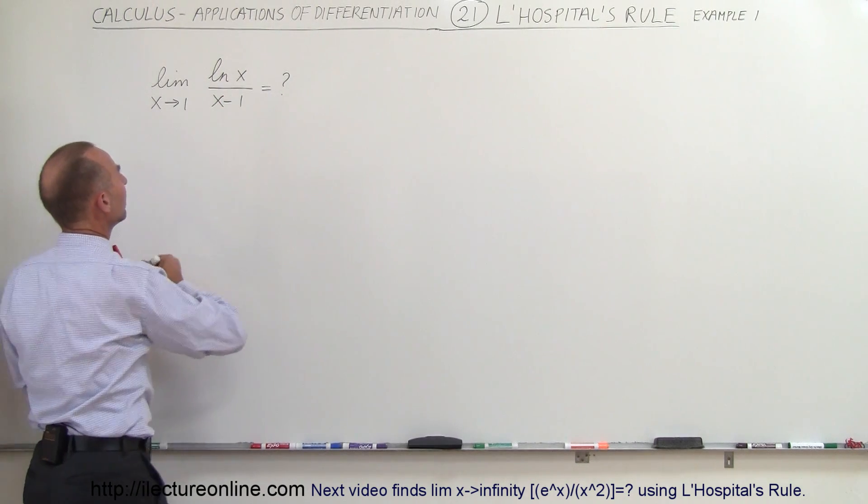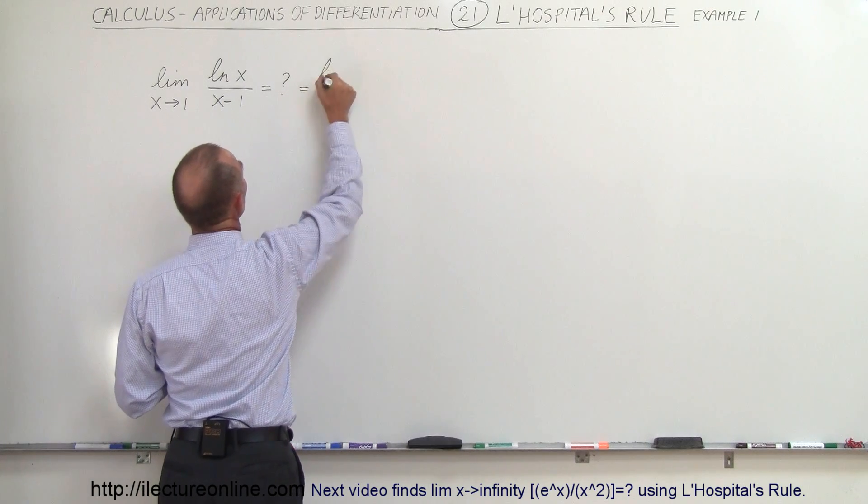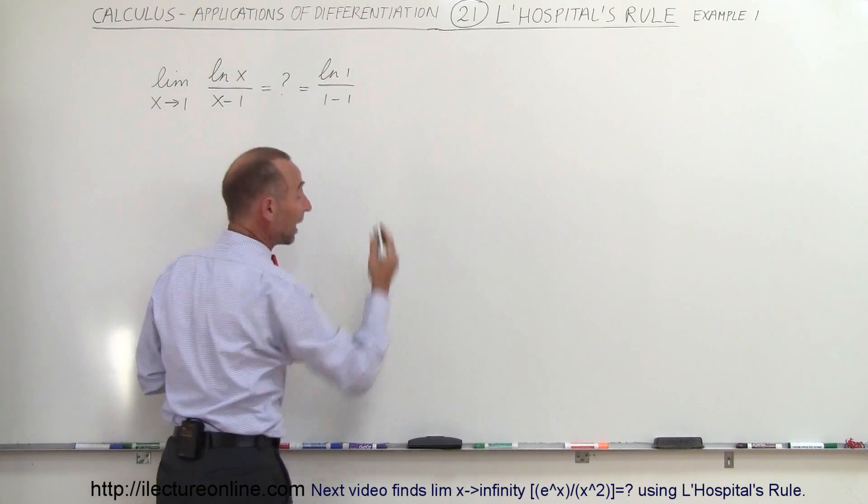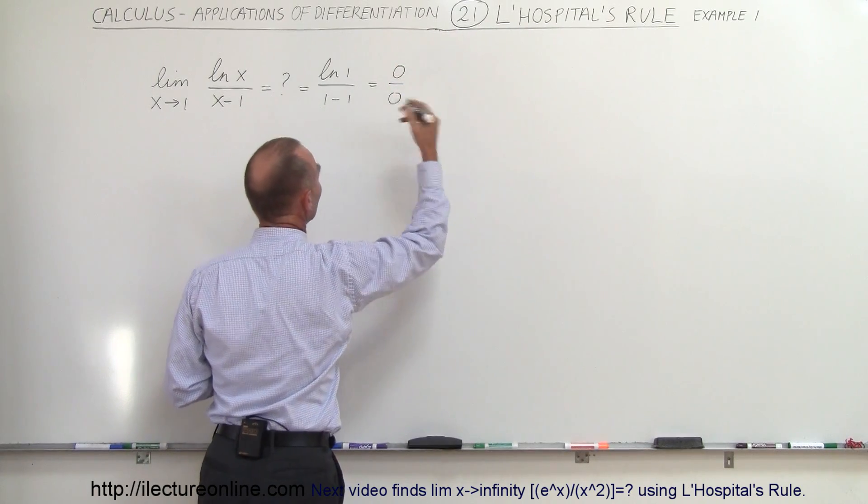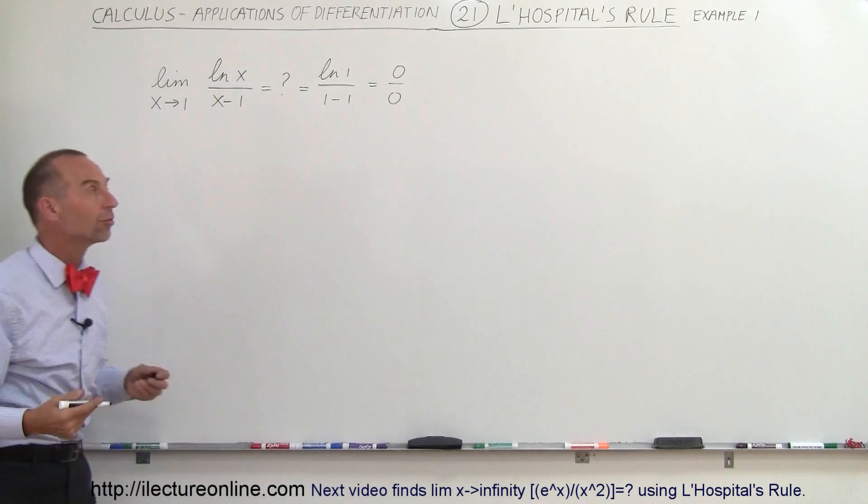If we let x equal 1, this now becomes the natural log of 1 divided by 1 minus 1. The natural log of 1 is 0 and 1 minus 1 is 0 and so this is undetermined or undefined, 0 divided by 0.